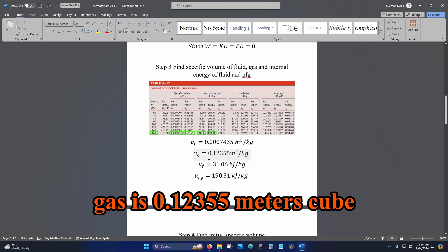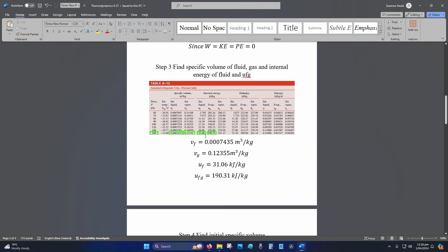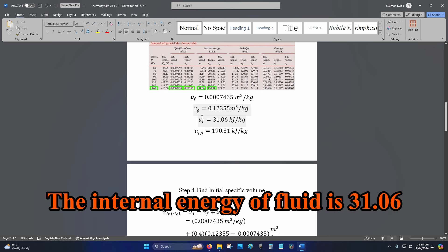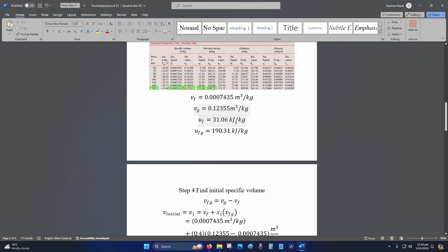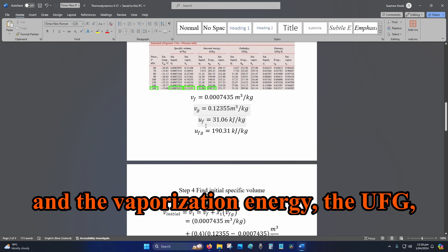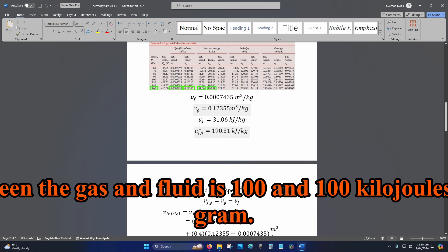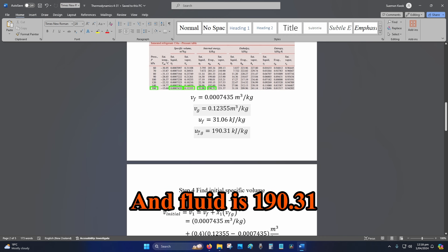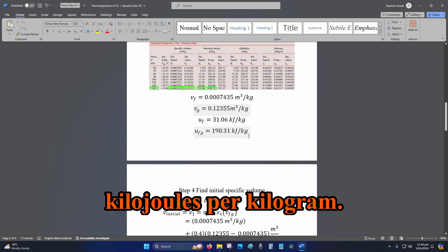The internal energy of fluid is 31.06 kJ/kg, and the vaporization energy u_fg, which is the difference between the gas and fluid, is 190.31 kJ/kg.